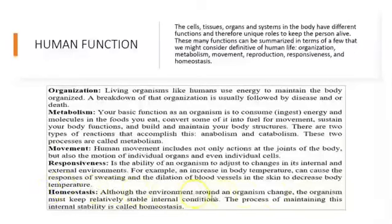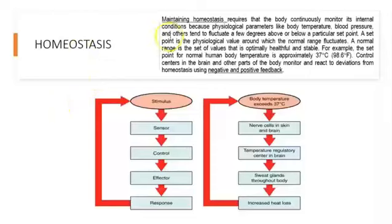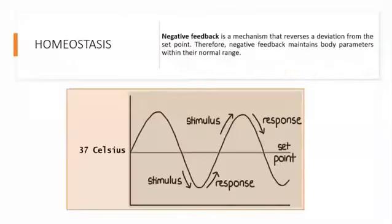Homeostasis is maintaining the balance of all the characteristics that we have inside our body. We maintain balance — homeostasis — using negative and positive feedback. We're going to use a graph regarding temperature to show the concept of homeostasis. Homeostasis means balance; in this case, the balance is the set point.